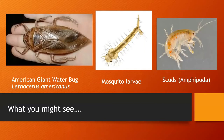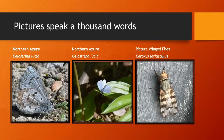Here are some pictures of things you might see in aquatic environments. The American giant water bug — also known as toe biters — are interesting and very scary looking but essentially harmless. There are also mosquito larvae: if you see them sitting on the surface of the water, that's what they look like. And then we have scuds, which are amphipods — you'll see them around too; they're pretty common.